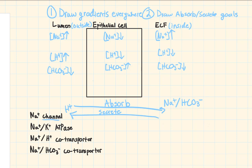Start with anything that is facilitated diffusion — you'll know it's facilitated diffusion because it will have the words 'channel' or 'carrier' in the name. Start with the sodium channel and draw it on both sides. On the lumen side, sodium moves in from high to low, following the laws of passive transport. On the ECF side, sodium would also move from high to low — which means moving into the cell. But based on our absorption goal, we should never draw sodium moving to the left, so we erase the ECF side.